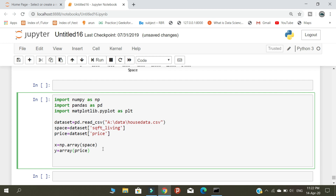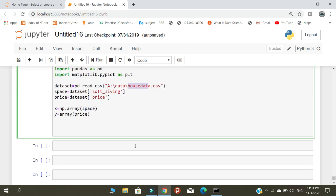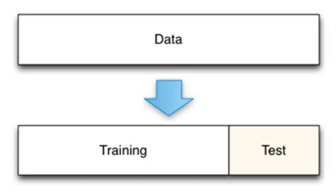After that, we are going to split the data into four different parts. We split the dataset because it is easier to produce more accurate results. When we have a large bunch of data, we cannot find a more accurate result, so we split the data into four different parts.